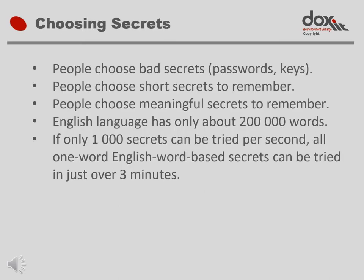In Part 2 we saw that secrets can be used to protect access to information. Only the person who knows the secret can open and read the document. People are very bad at choosing secrets such as keys and passwords. People choose short secrets to make them easy to remember, and they choose meaningful secrets such as names and words.